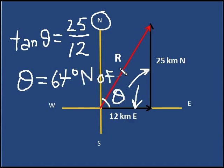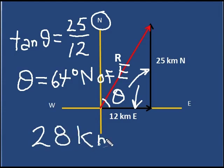And so my displacement is given as the following. 28 kilometers at 64 degrees north of east.